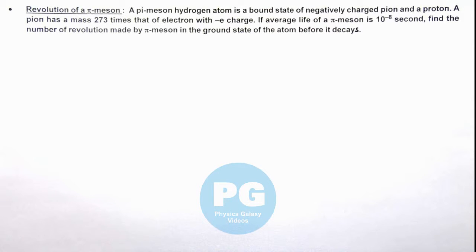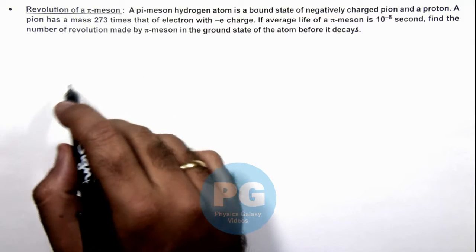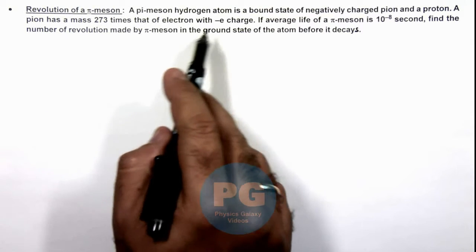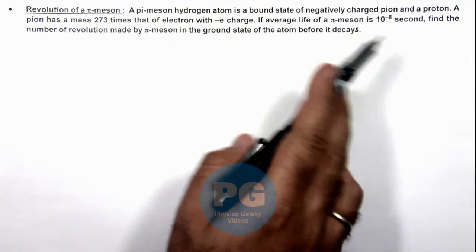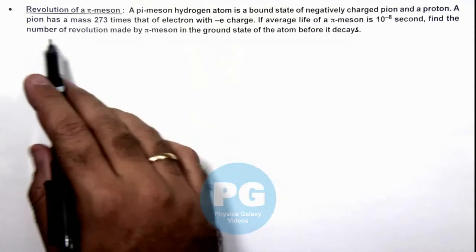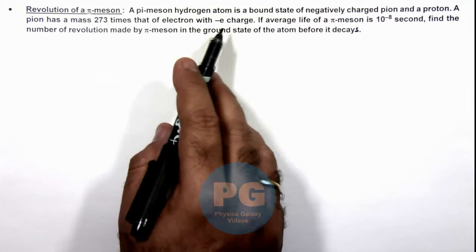In this illustration, we'll discuss the revolution of a π-meson. Here we are given that a π-meson hydrogen atom is a bound state of negatively charged pion and proton. A pion has a mass 273 times that of electron with -e charge.